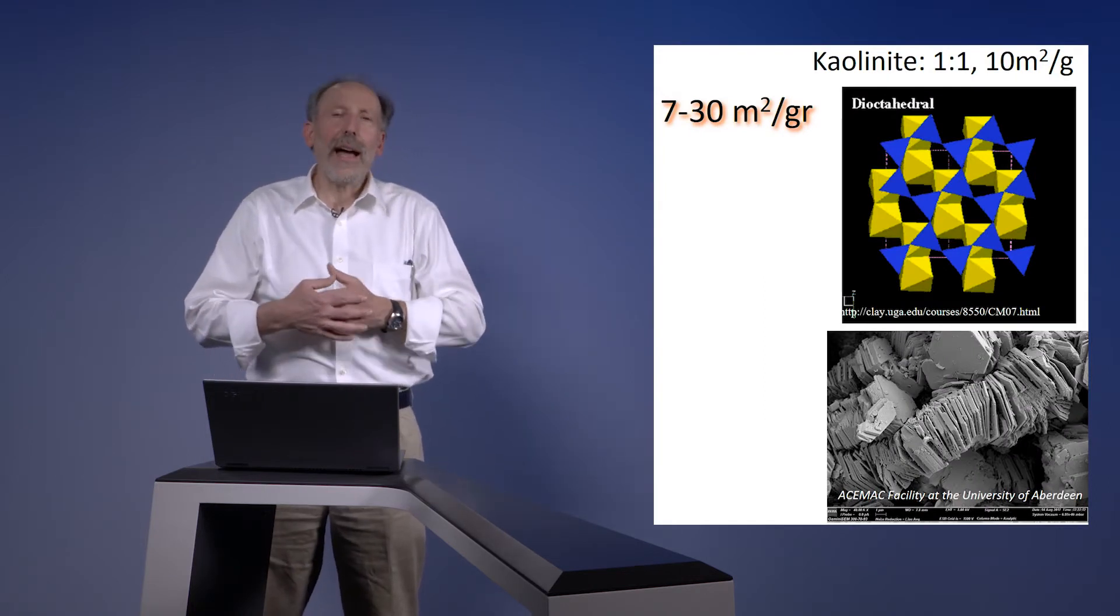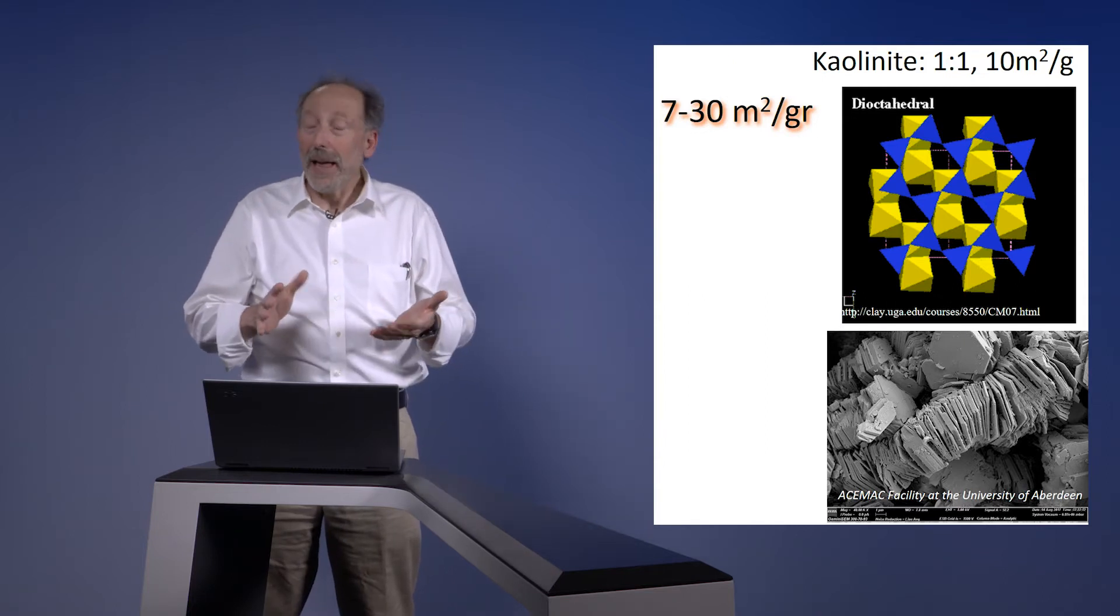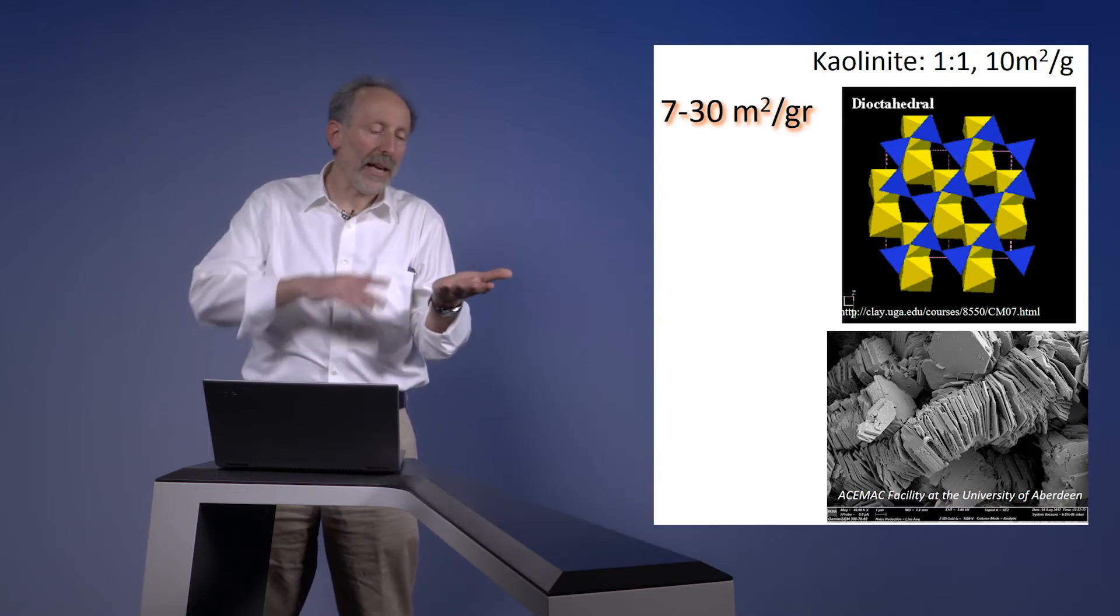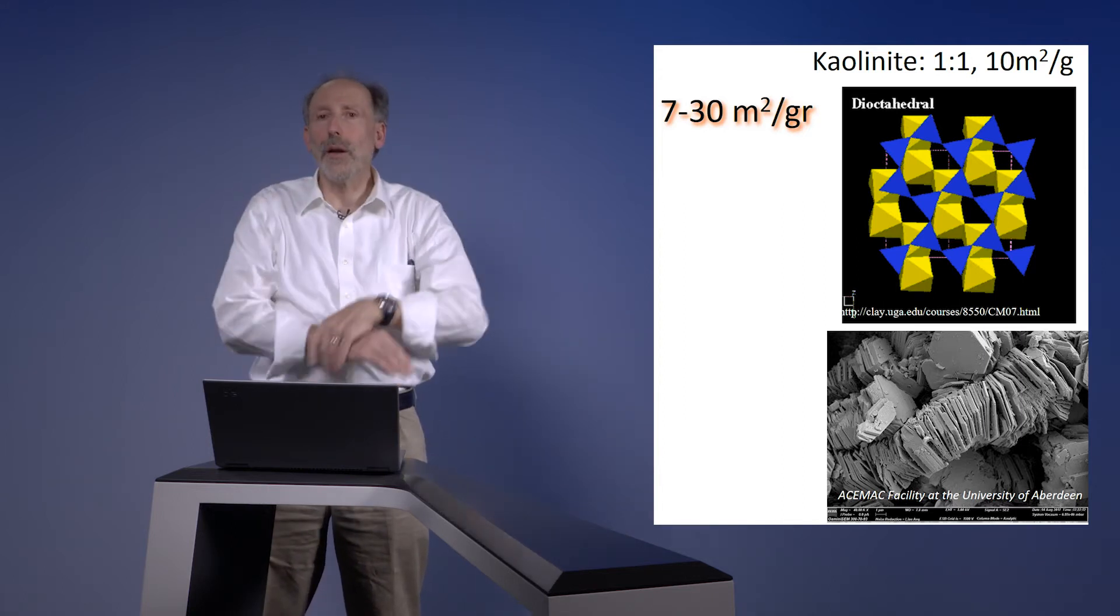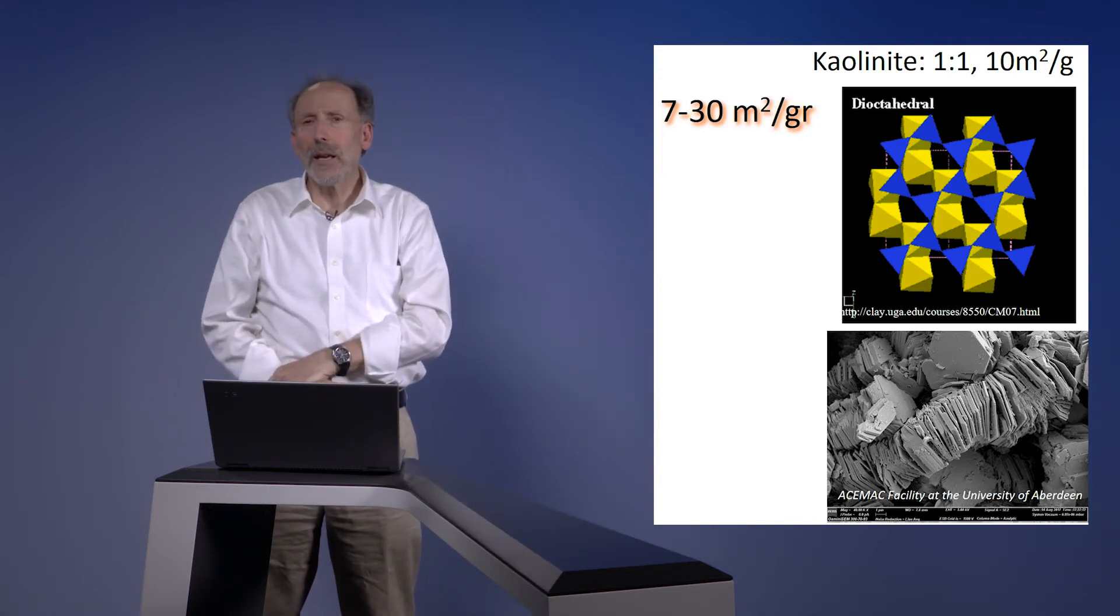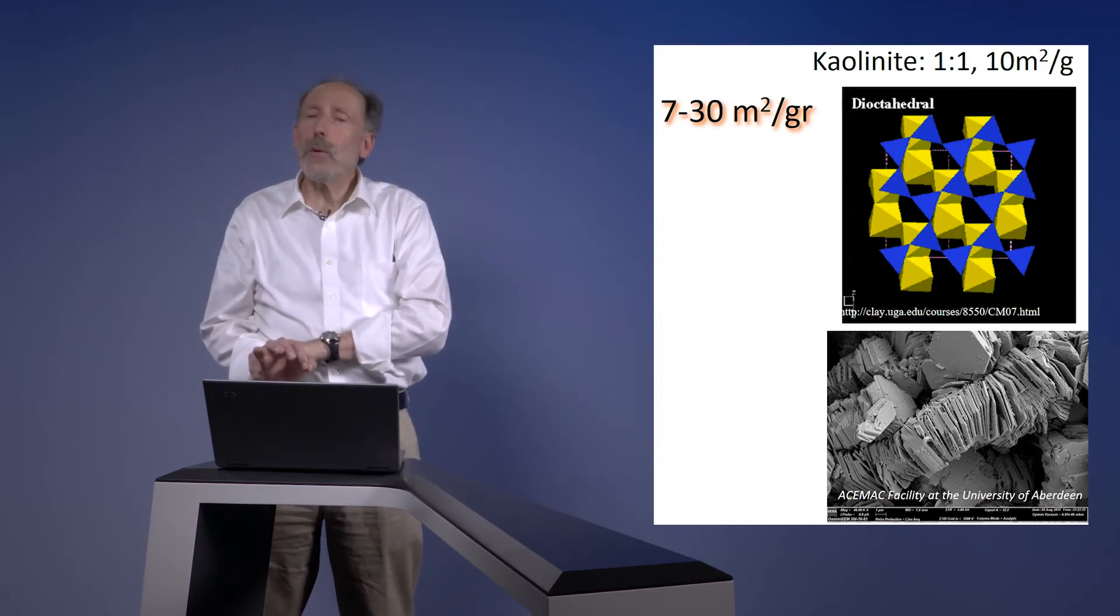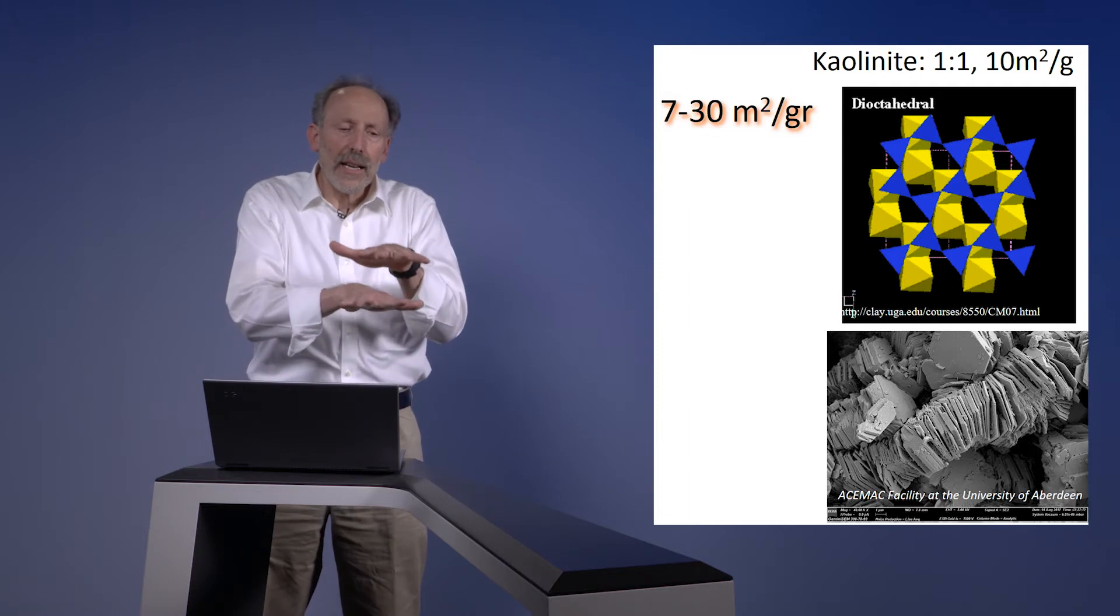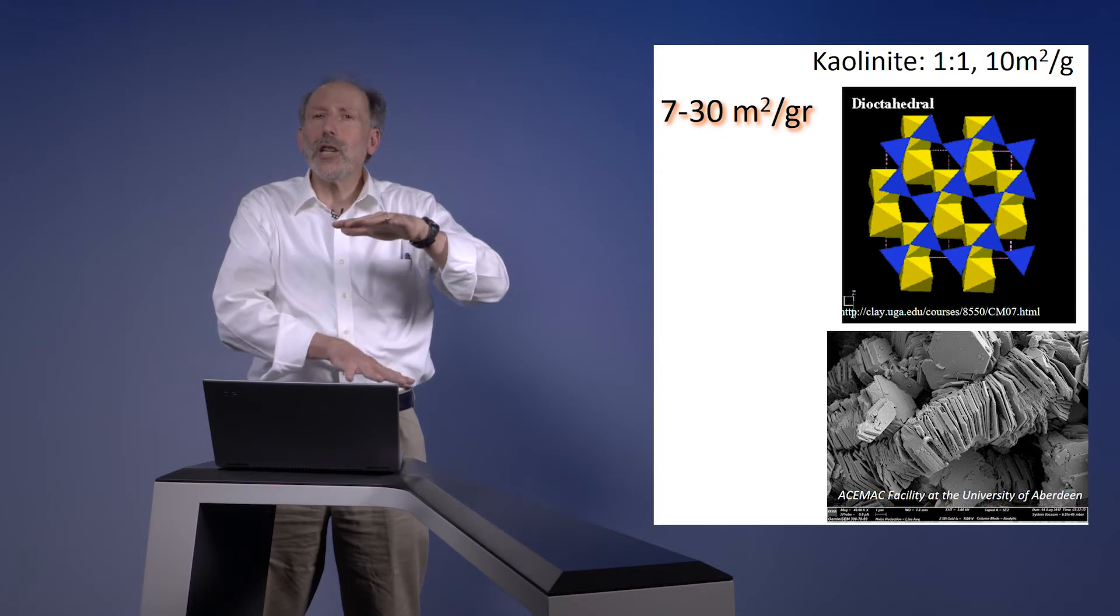We're going to start by looking at kaolinite. Kaolinite is a one-to-one mineral. That means it has a layer of tetrahedra and a layer of octahedra, continuing in an alternating one-to-one ratio. Kaolinite also has very little isomorphic substitution, so it does not have a lot of cations stuck between it, so it does not hydrate.